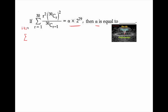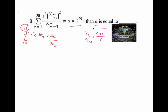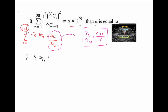Let us consider the left hand side and simplify: r² · C(30,r) · C(30,r) / C(30,r-1), where r = 1 to 30. We know the property that C(n,r) / C(n,r-1) = (n - r + 1) / r. Applying this, we can write summation of r² · C(30,r) · (31 - r) / r.